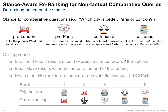So we want to change this. And then we have to think about what stance means for comparative questions. For comparative questions, we could have pro London in the question "which city is better", or pro Paris. And we could also have the option that both are equally good, or we can have no stance at all — more like facts.